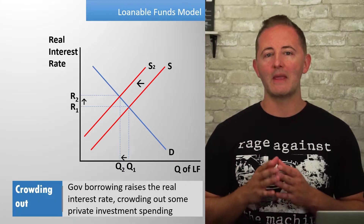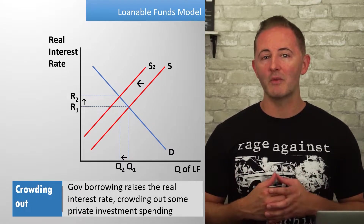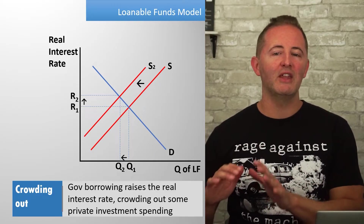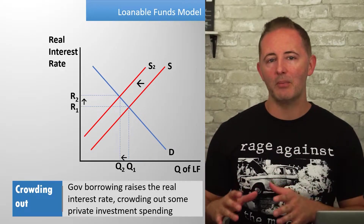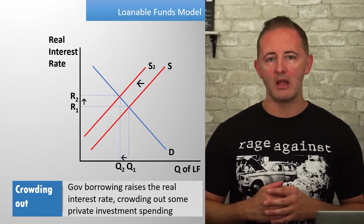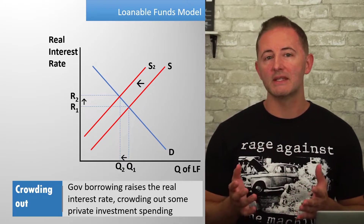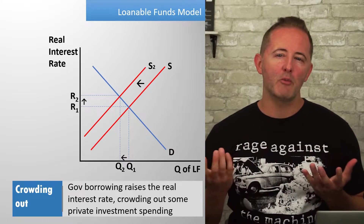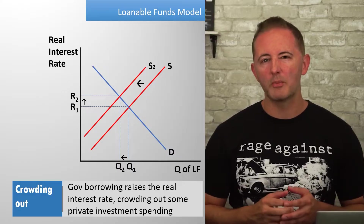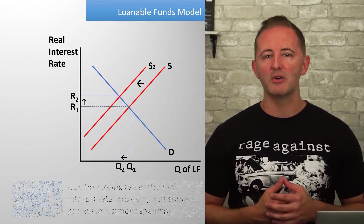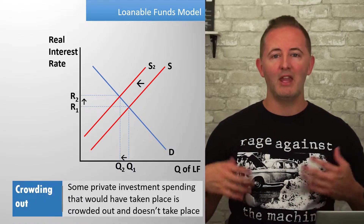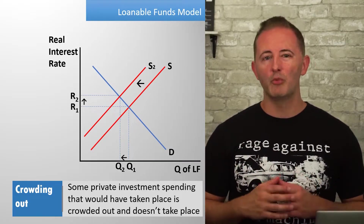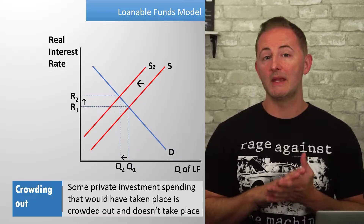Crowding out refers to the fact that increased borrowing by the federal government pushes up the real interest rate, crowding out private investment spending that would have taken place at the lower interest rate. Any interest-sensitive spending will decrease, including both consumer and investment spending. Think of mortgage rates: when mortgage rates are lower, people can afford a bigger, more expensive house than when rates rise, and some people will choose not to buy a house at all.